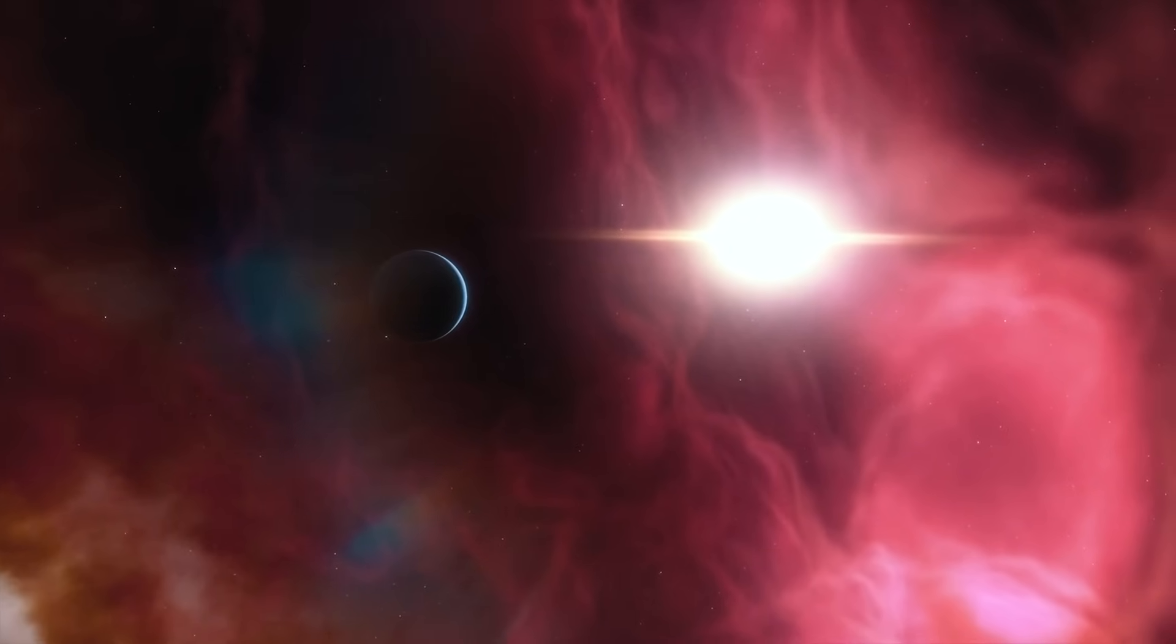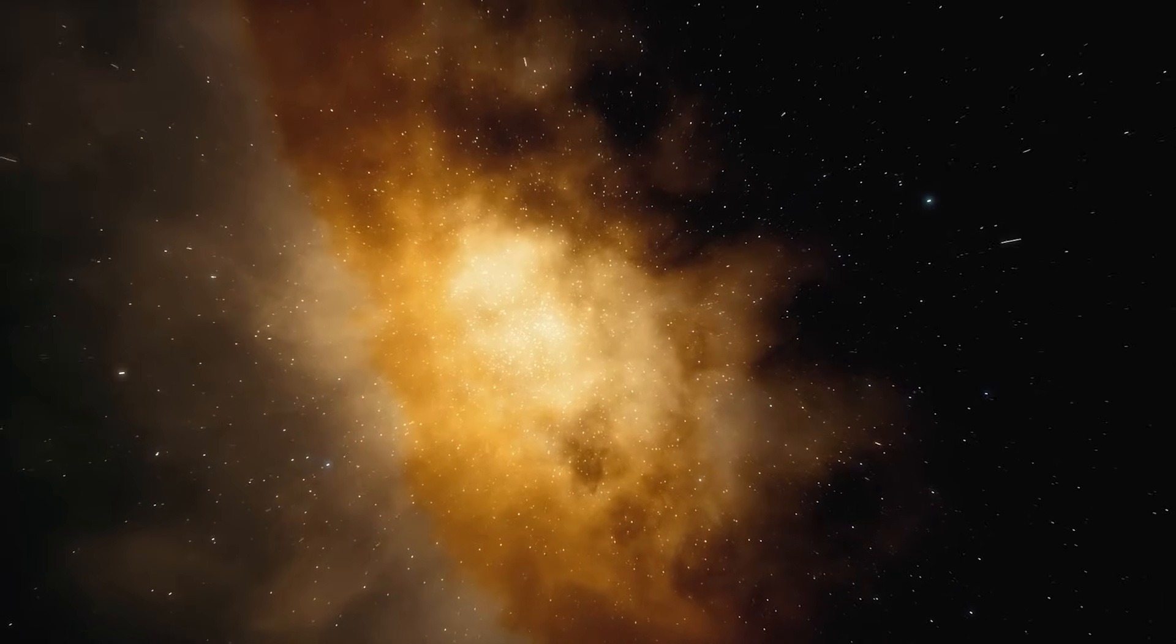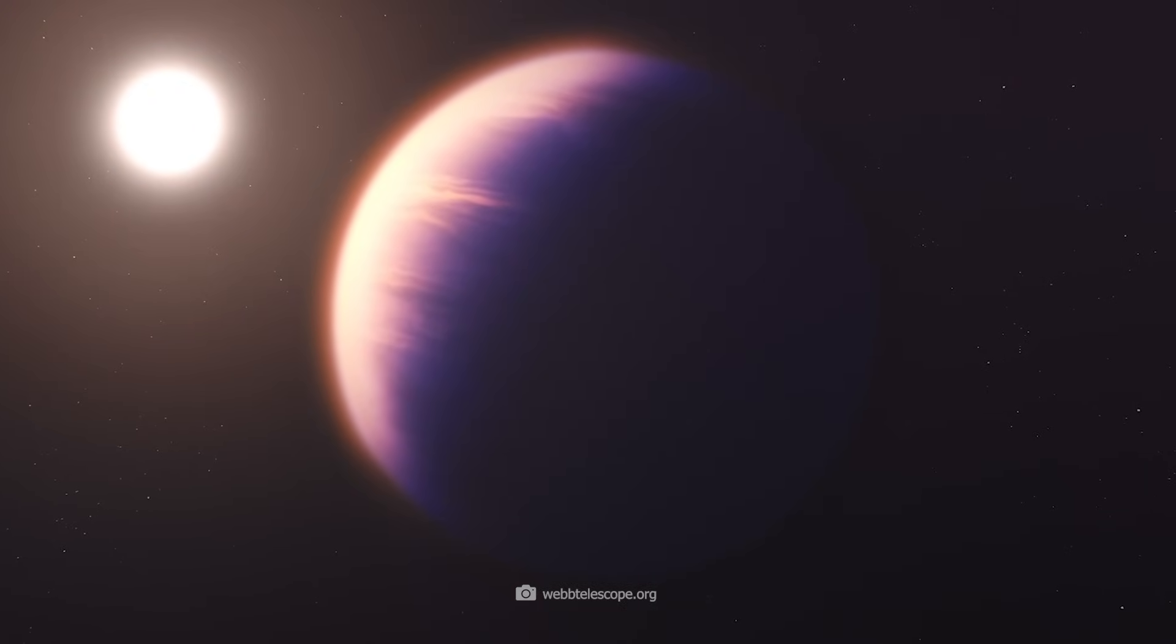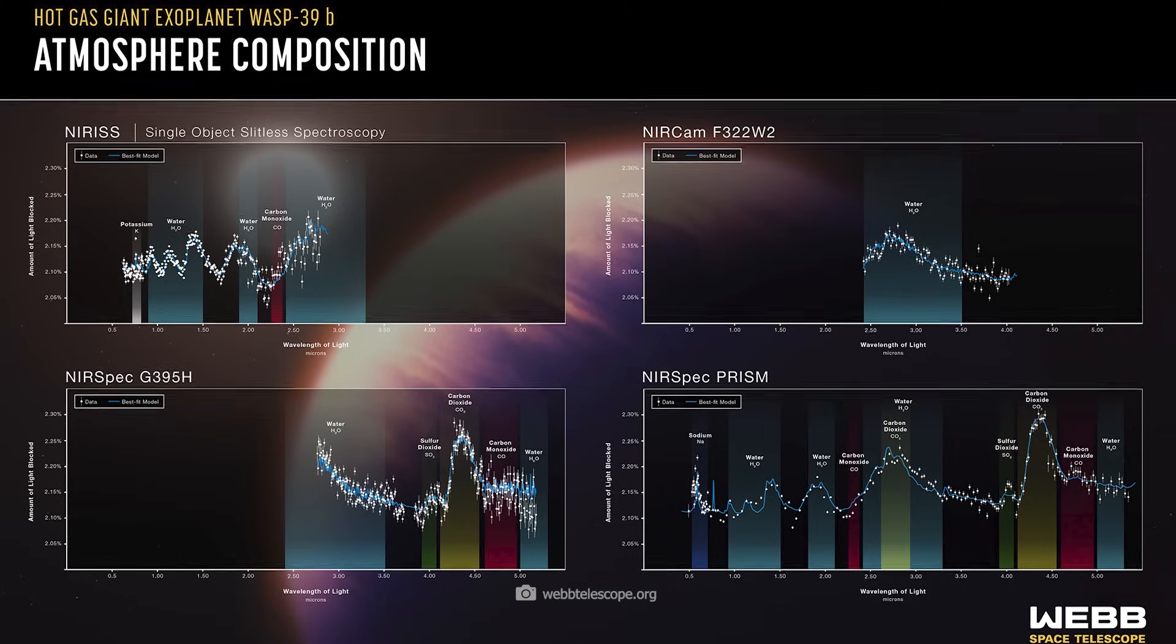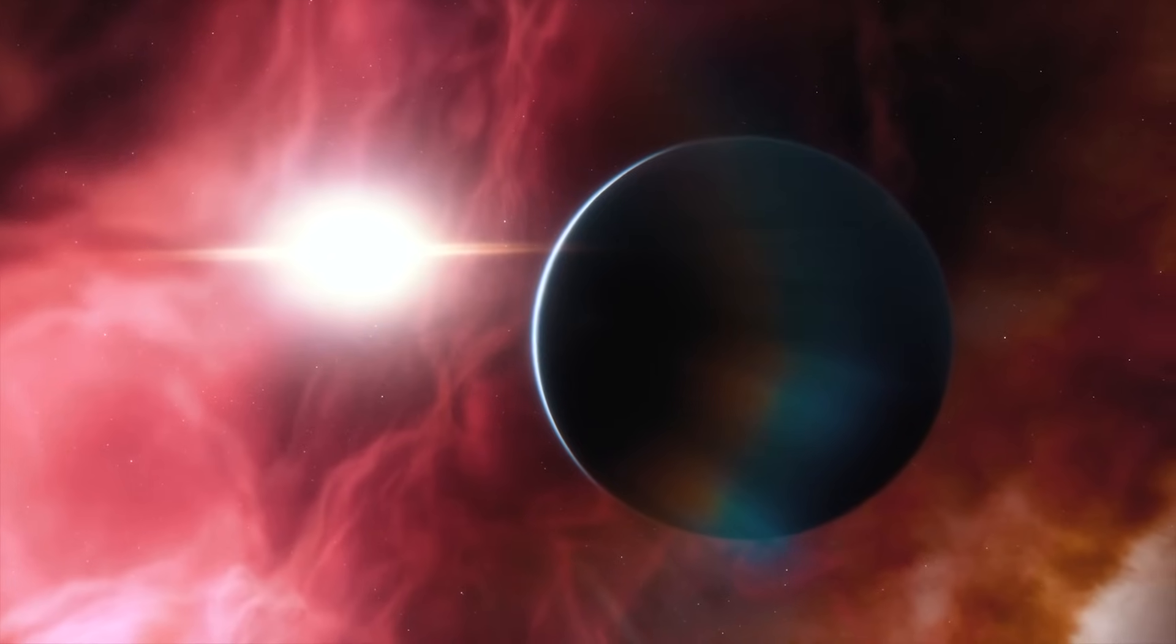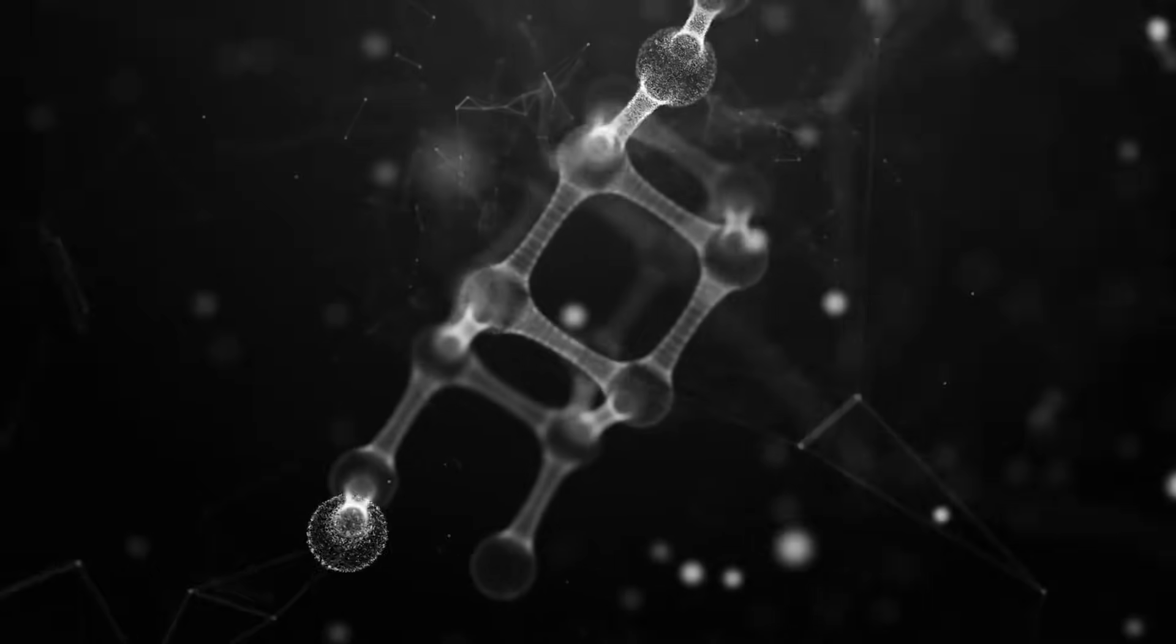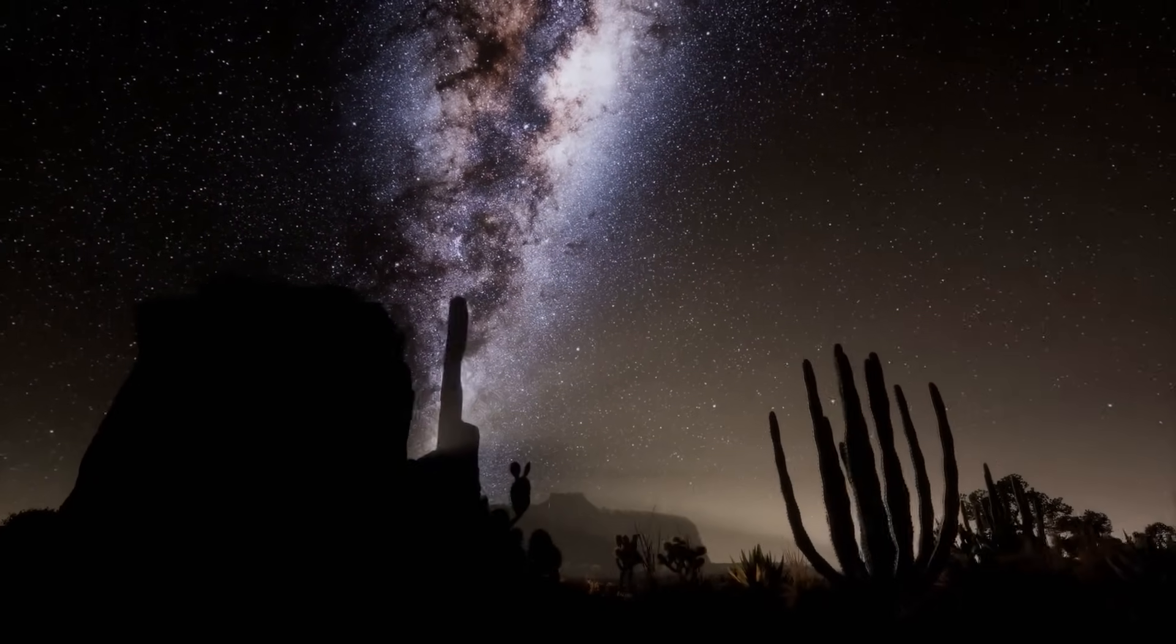We will then know which of the planets with the highest Earth similarity index really resemble our home and are possibly inhabited. James Webb has already demonstrated his excellent capabilities with an analysis of the exoplanet WASP-39b. The diagram shows the molecular components of the atmosphere in great detail. This world, which is around 700 light-years away, showed astonishing similarities with our Jupiter, except that WASP-39b is significantly hotter. Traces of carbon monoxide, sulfur dioxide, potassium, sodium, and water were found in the atmosphere. WASP-39b is therefore certainly not a potentially habitable world.